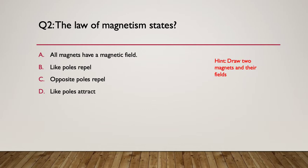Here's your hint: draw two magnets and draw in how the fields interact — that will remind you what the law is. The answer is B: like poles repel. All magnets do have a magnetic field, but that's not the law. Opposite poles don't repel — they actually attract, and like poles repel, they don't attract. So the only possible answer was B.